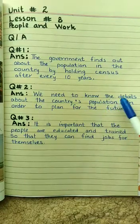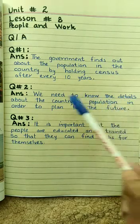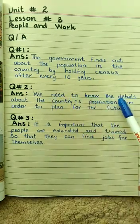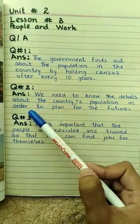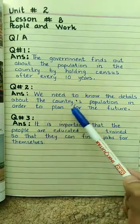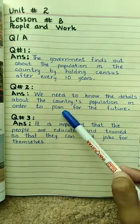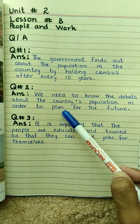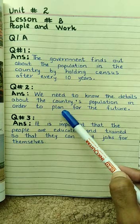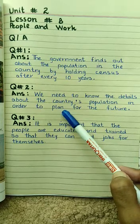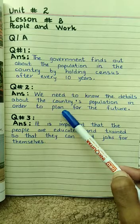Here, 'details' means information. So we need to collect information about the population of a country because it helps us to make plans for the future. For example, if a census tells us that there are about 1 million babies in a country, then with the help of this information the government will plan to make more schools for the future, as more schools will be needed in the coming years.